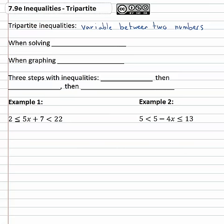These are going to be inequalities such as negative five is less than x, which is less than or equal to two or something like that, where the variable is between two numbers rather than going off to infinity forever.